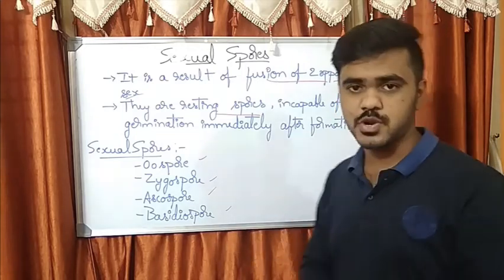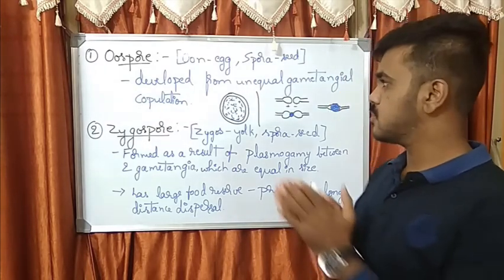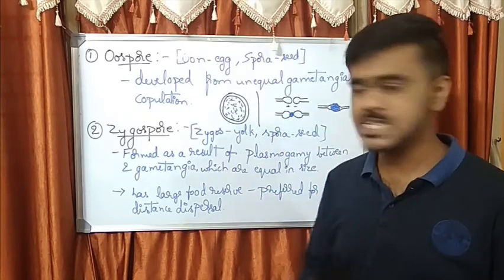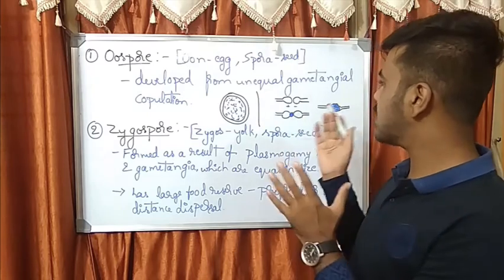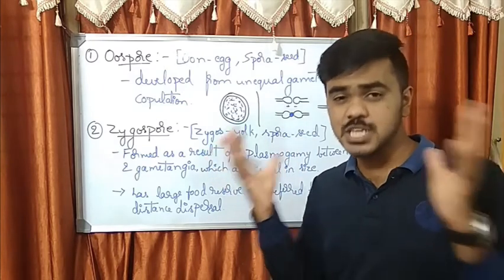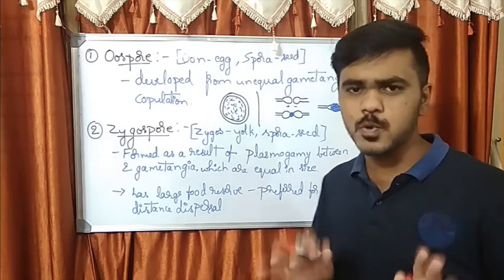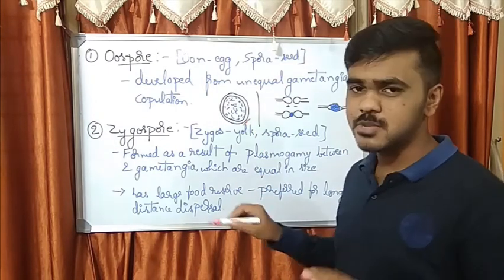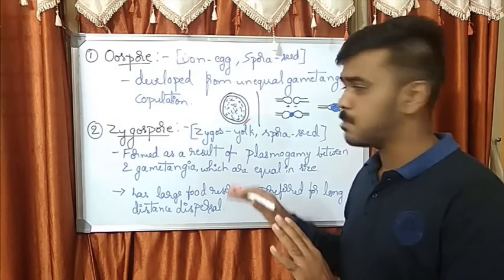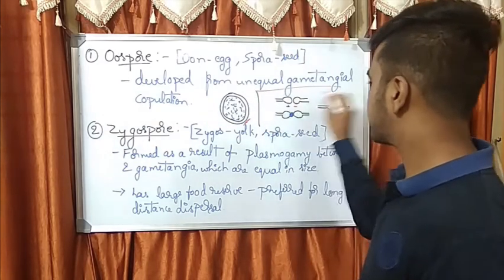Oospore - the word 'oo' means egg and 'spora' means seed. It is developed from unequal gametangial copulation. I hope you remember gametangial copulation where the entire gametangia will get fused. I just drawn to show you how oospore looks like, but don't stick on to this image because this is just a reference. It will be circular or oval in shape, but not all oospores look exactly like this.